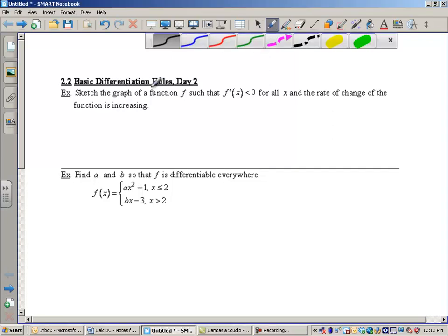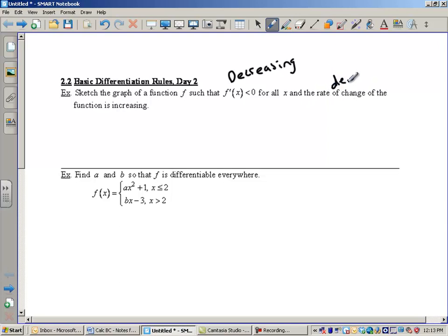We're going to take a look at coming up with the graph of a function such that f prime of x is less than zero. And what would that mean to us if the derivative is always less than zero? This should tell you that your graph must be decreasing. So it's decreasing, but then it says that the rate of change of the function, which also means derivative, is increasing. So the graph is decreasing, but the derivative has to be increasing or getting larger.